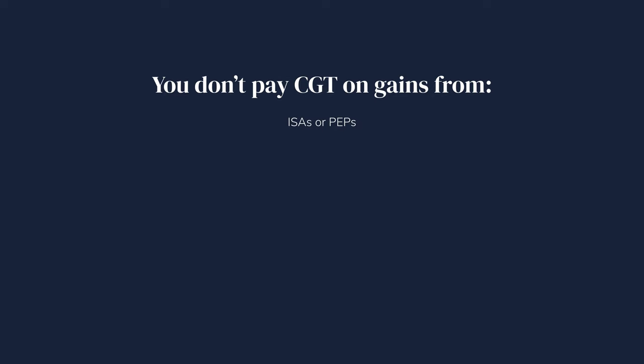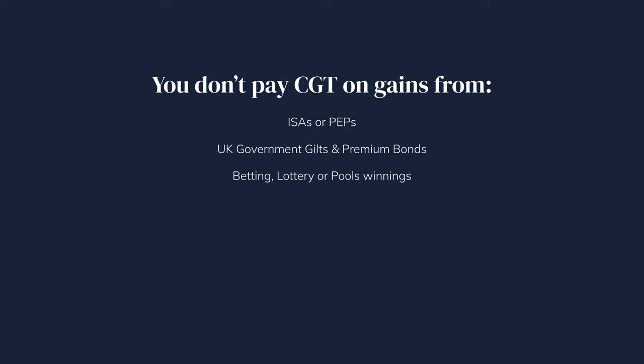You also do not pay capital gains tax on certain assets, including any gains you make from ISAs or PEPs, UK government gilts and premium bonds, betting, lottery or pools winnings, or when someone dies or when you inherit an asset. Inheritance tax is usually paid by the estate of the person who's died, so you only have to work out if you need to pay capital gains tax if you later dispose of the asset.